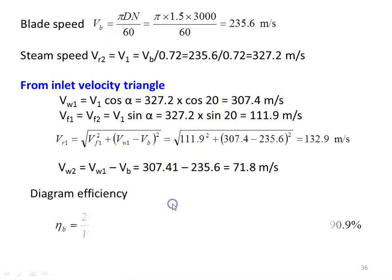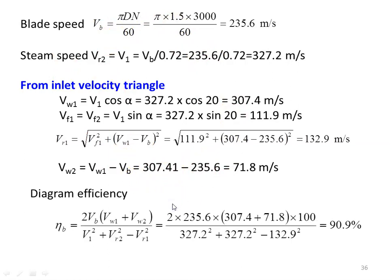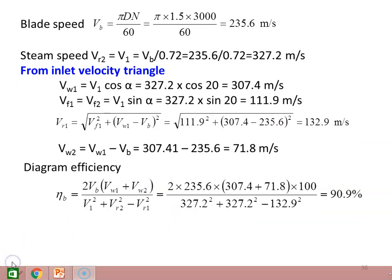Diagram efficiency η = 2Vb(Vw1 + Vw2) / (V1² + Vr1²) × 100 = 2 × 235.6 × (307.4 + 71.8) / (327.2² + 132.9²) × 100 = 90.9%.